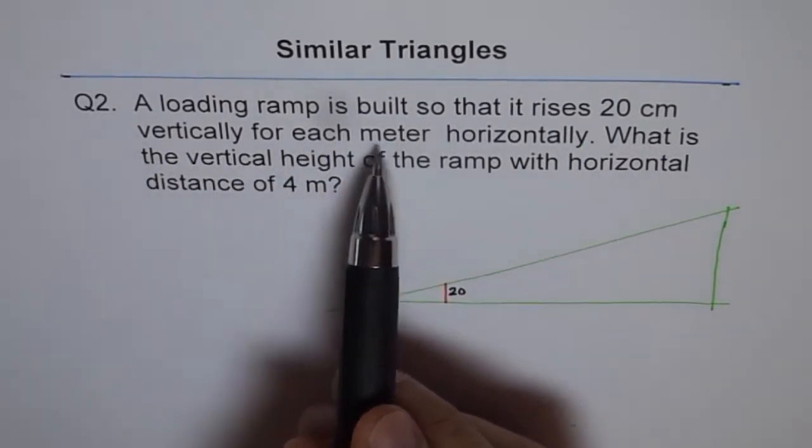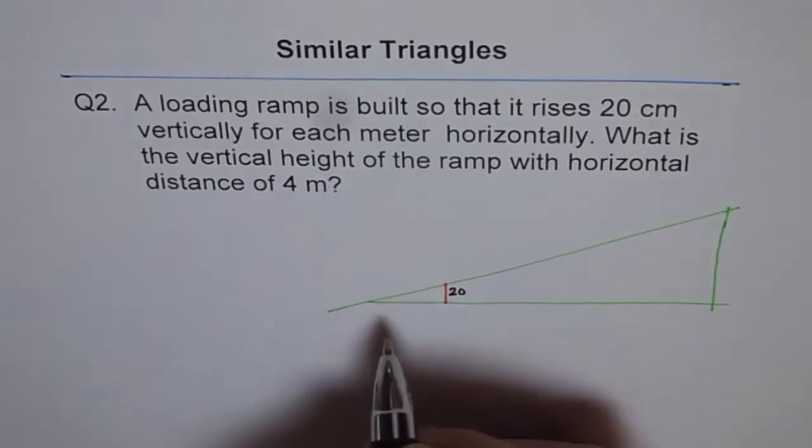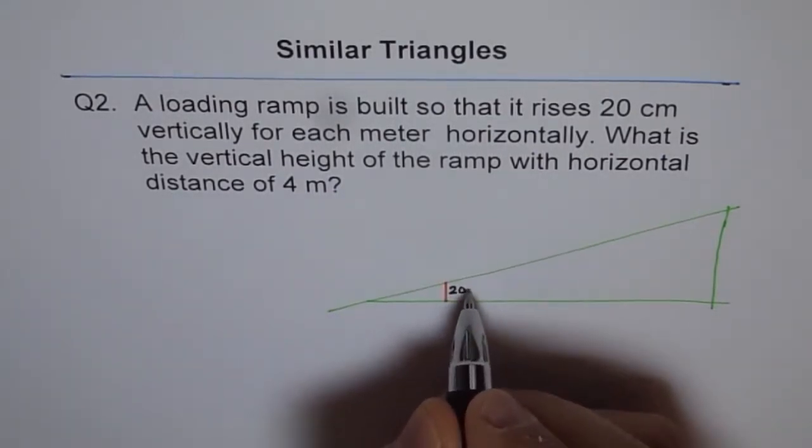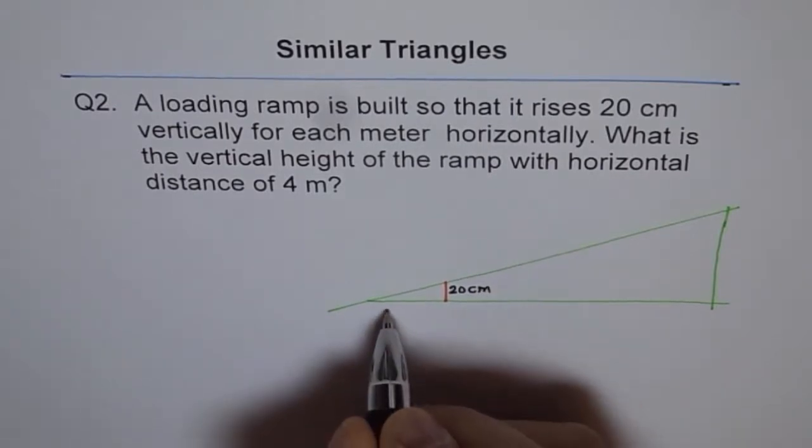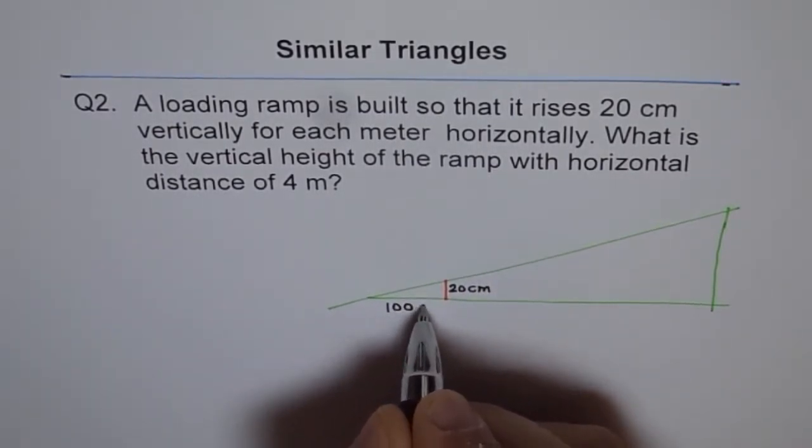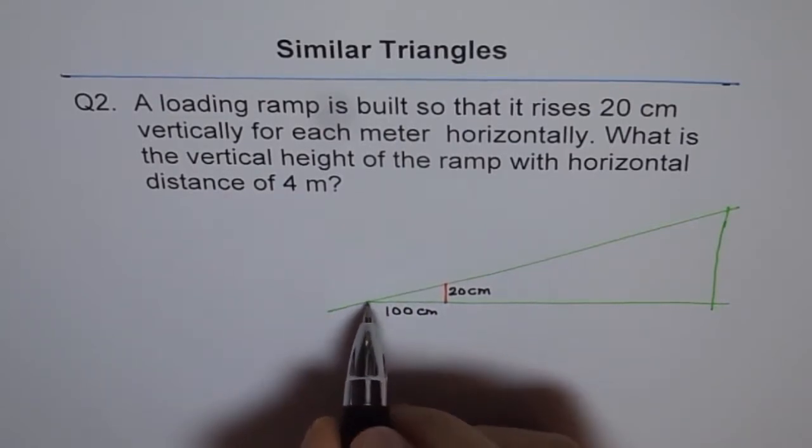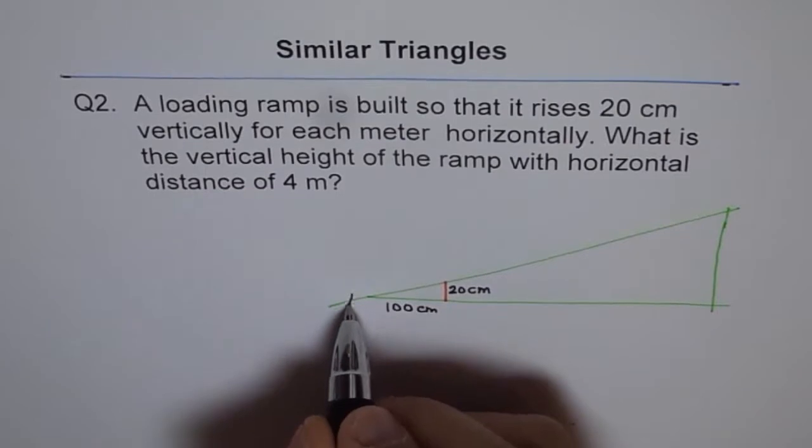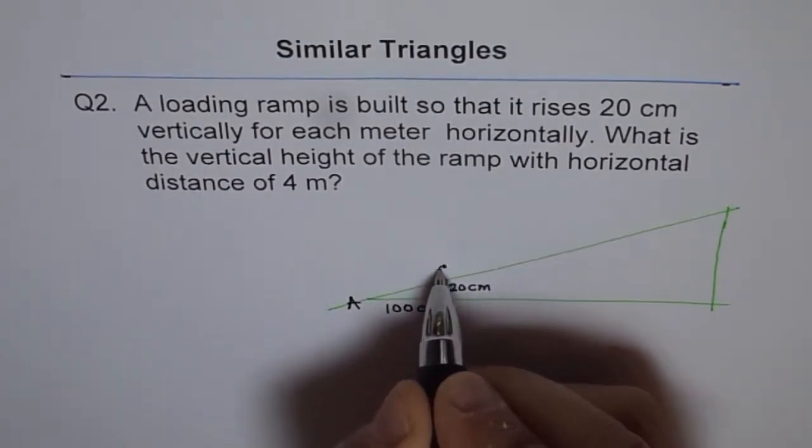For each meter, let me write this as 100 because I wrote this in cm. So 1 meter is 100 cm. Let me write this as 100 cm. So that becomes a small triangle. Let me say this triangle is A, B and C.